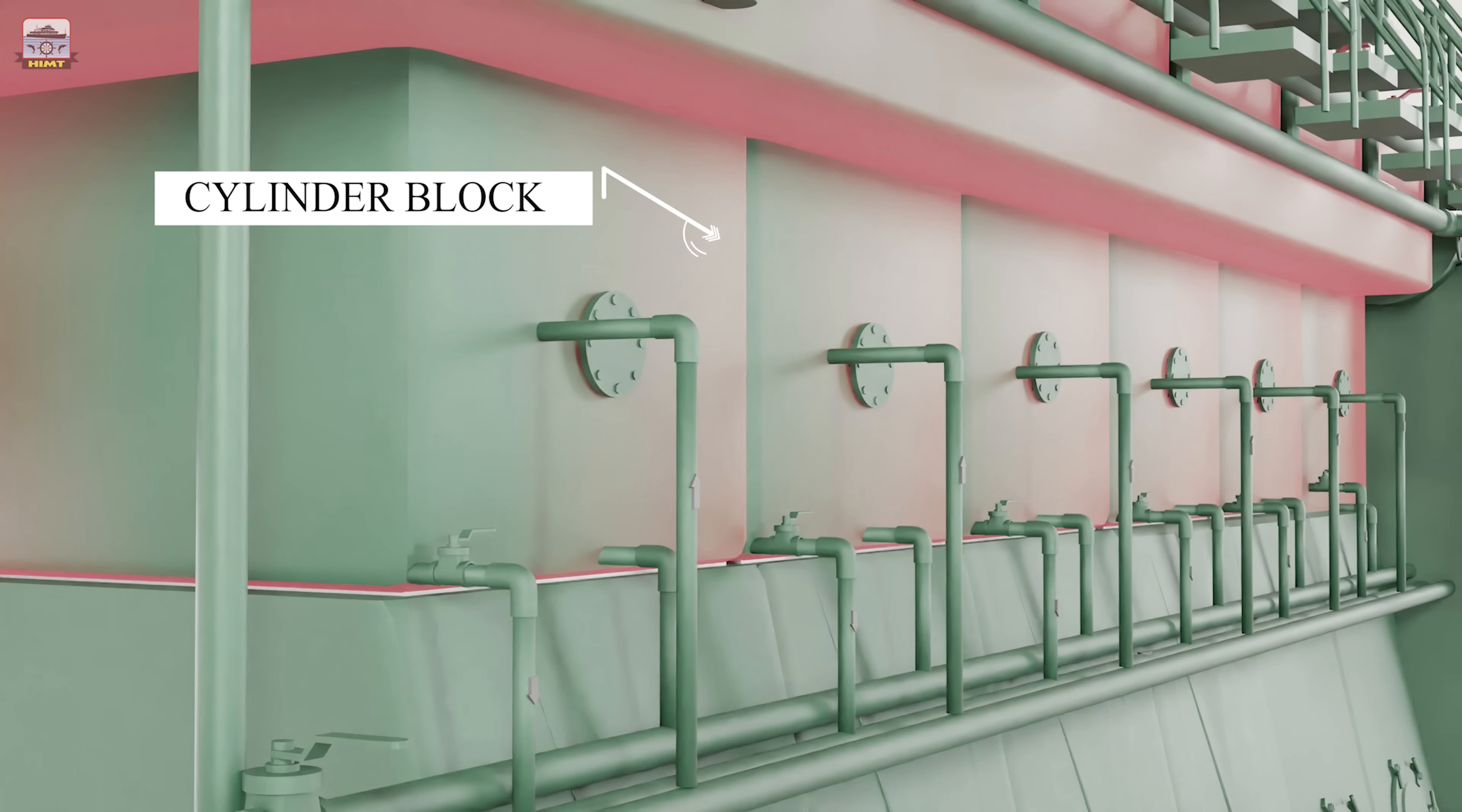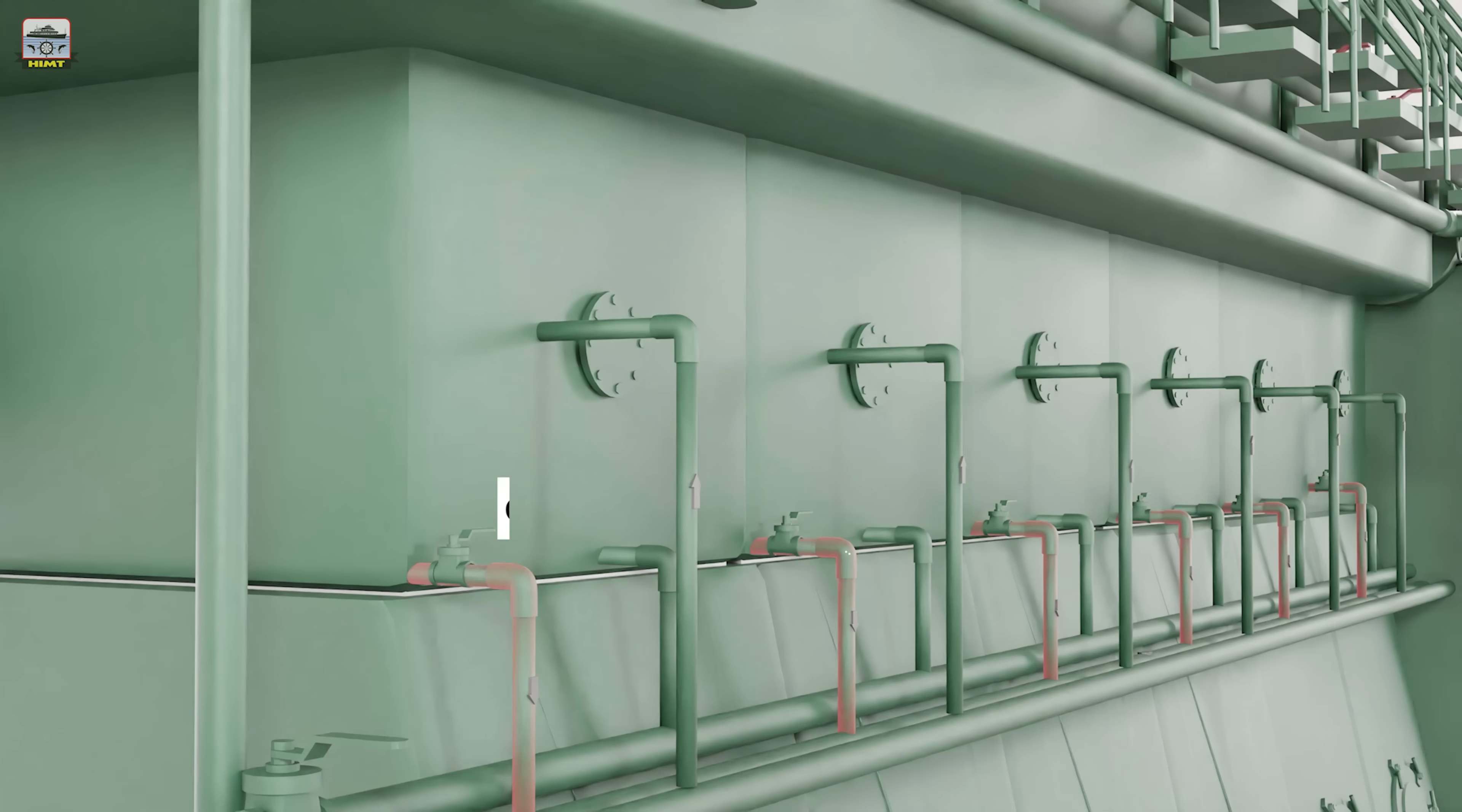The cylinder block is also called as entablature. The under-piston scavenge lube oil is drained by these pipes to scavenge box lube oil drain tank. The stuffing box lube oil is drained by these pipes to stuffing box lube oil drain tank.